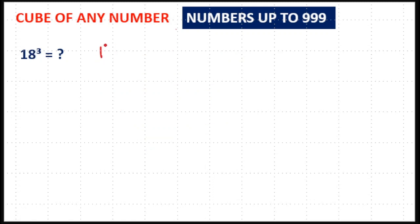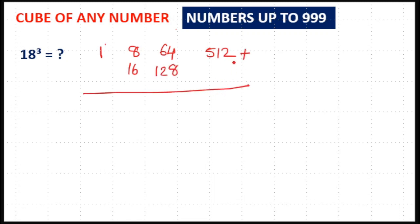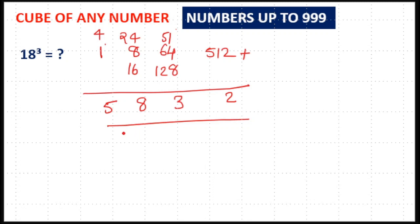Next is 18 cube. Take the cube of 1, which is 1. 8 cube: 8 × 8² = 8 × 64 = 512. Then 1² × 8 = 8, and 8² × 1 = 64. Doubling: 8 × 2 = 16, and 64 × 2 = 128. Adding together, write one digit at a time: write 2, carry 51; 128 + 64 = 192, plus 8 and 4 and 1 is 13 → 192 + 51 = 243, write 3, carry 24; 24 + 16 = 40, plus 8 = 48, write 8, carry 4; 4 + 1 = 5. So the answer is 5832.